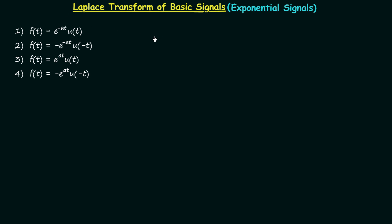In this lecture I will give you the Laplace transform and region of convergence of different exponential signals. On your screen you can see 4 different exponential signals. Out of these 4 signals I will calculate the Laplace transform and ROC of the first signal, and for the remaining 3 signals you can easily obtain the Laplace transform and ROC following the same process. However, I will give you the final result for the 3 signals also.